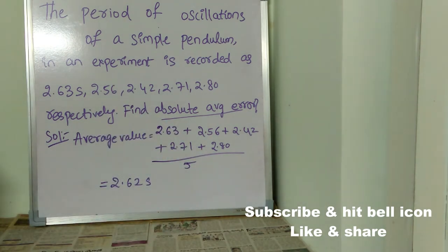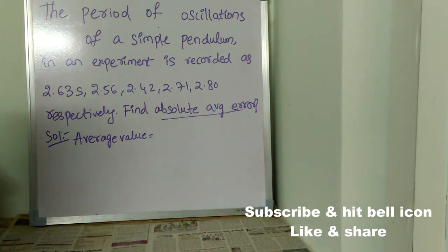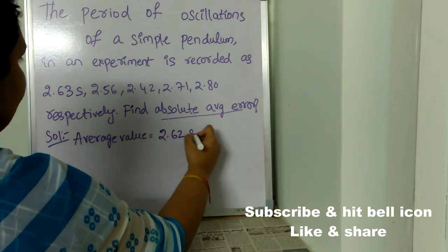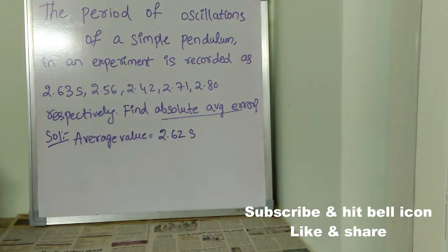2.62 seconds is the average value which we just found out. So, till here we are clear, right? So, directly we are writing the average value which we just found which is 2.62 seconds. We need to find the differences between the given values.